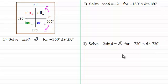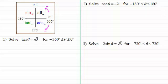Let's start with the first one, where we've got to solve tan θ equals root 3, for θ greater than or equal to minus 360 degrees but less than zero degrees. Copying down the question: tan of the angle θ equals root 3, and what we've got here is a positive value.